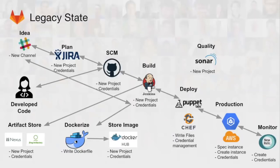If we want to Dockerize and take this into the cloud, we'll need to create a Dockerfile and maybe use Docker Hub to store images, or in addition have an artifact store in Nexus or Artifactory. Then we connect that build process into the Slack channel we've created so that build statuses are visible to developers.